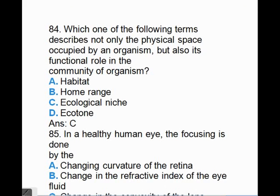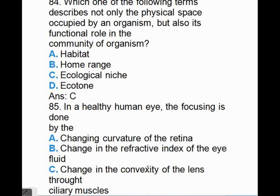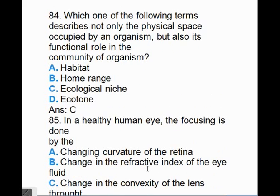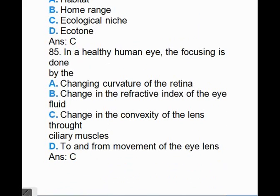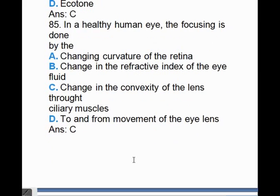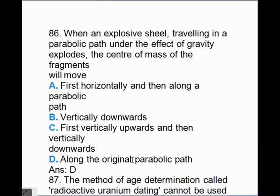In a healthy human eye, the focusing is done by the, answer is C, change in the convexity of the lens through ciliary muscles. When an explosive shell traveling in a parabolic path under the effect of gravity explodes, the center of mass of the fragments will move, answer is D, along the original parabolic path.